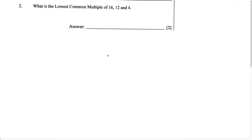This question says: what is the lowest common multiple of 16, 12, and 4? So they want us to find the LCM, which is the lowest common multiple of those three numbers: 16, 12, and 4.